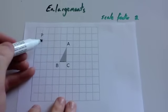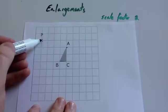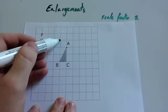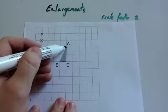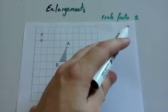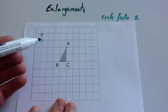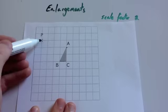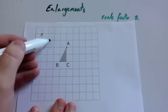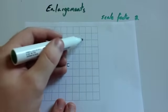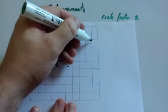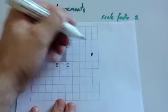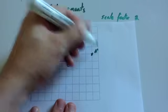So let's enlarge. First of all let's start off with point A. Point A is 4 across and 1 down. Using a scale factor of enlargement 2 we're going to double those distances. So instead of 4 across and 1 down we're going to go 8 across and 2 down. So A would go to here. Let's call it A dash.